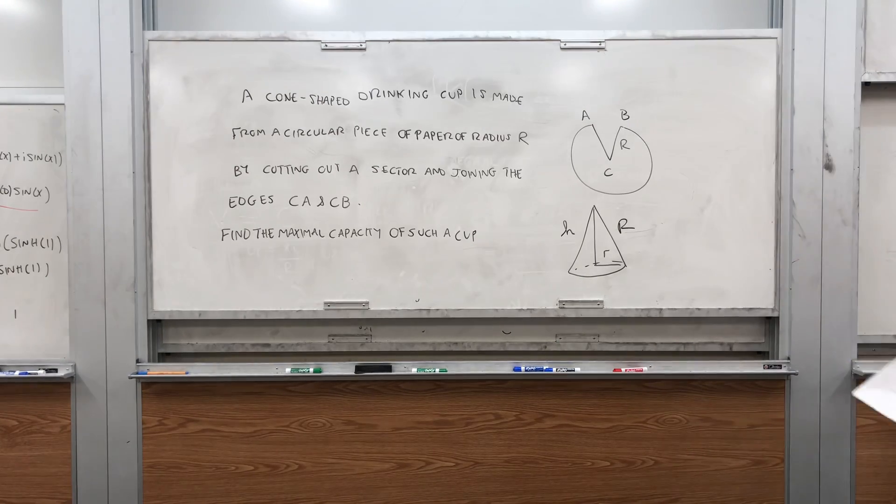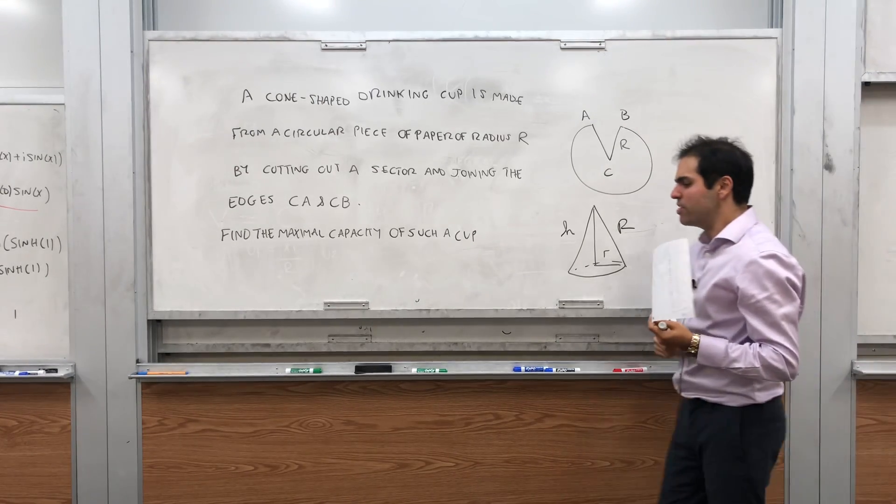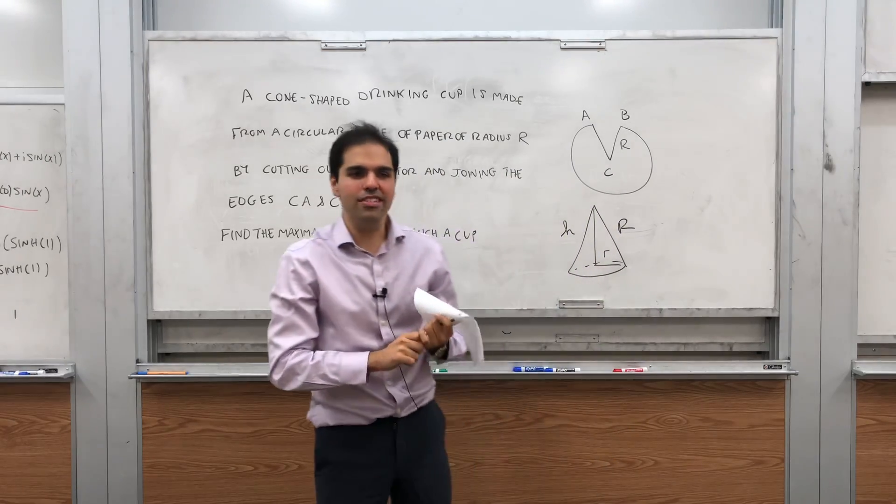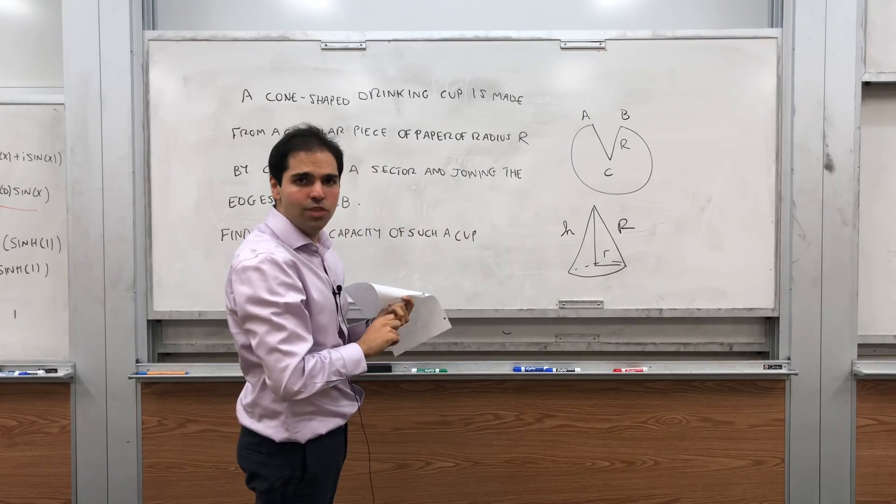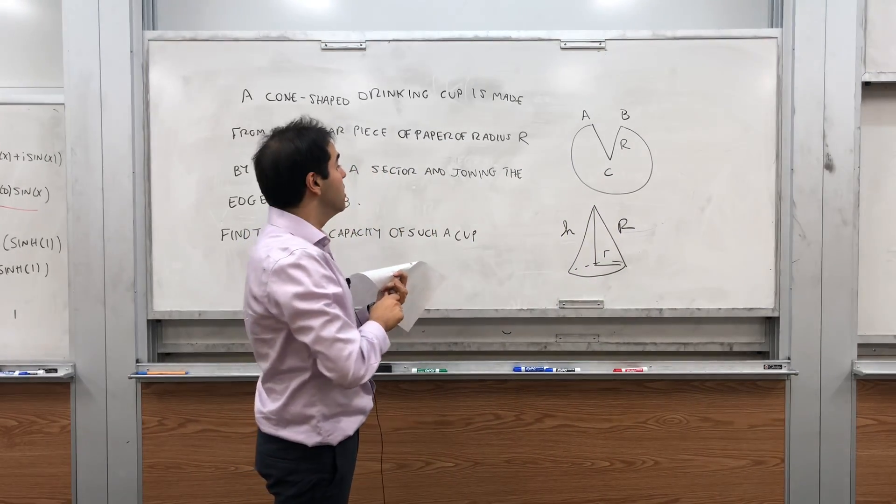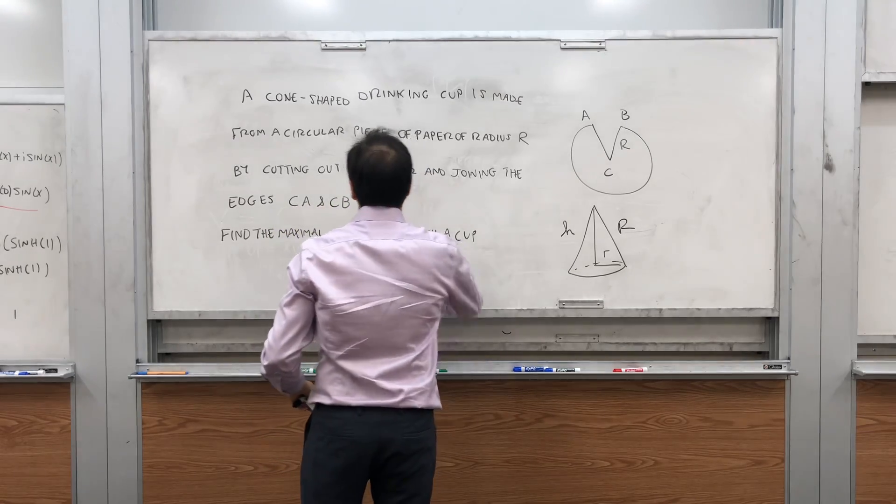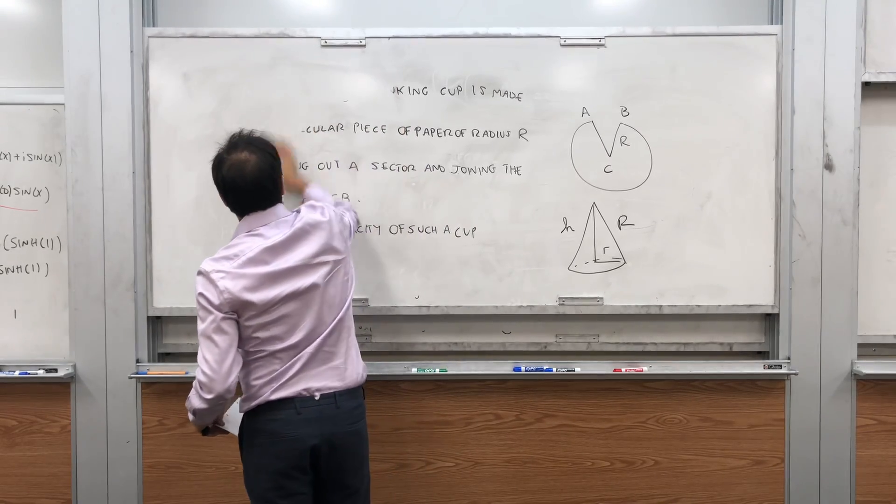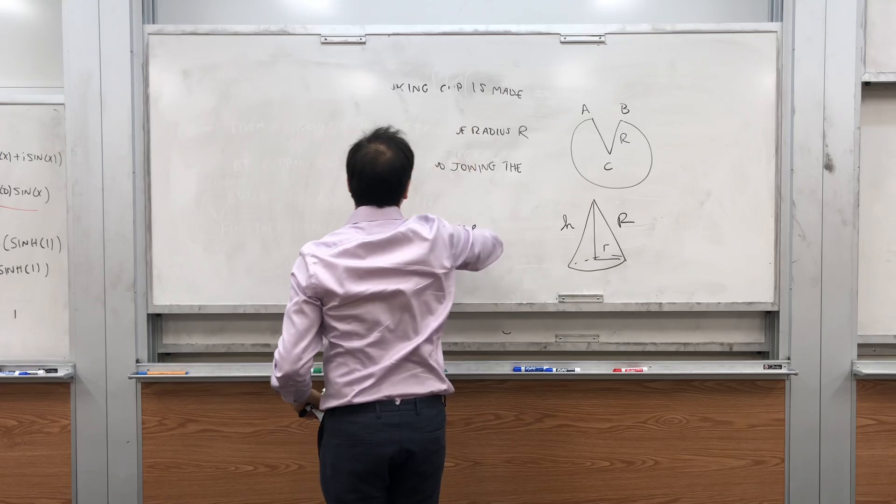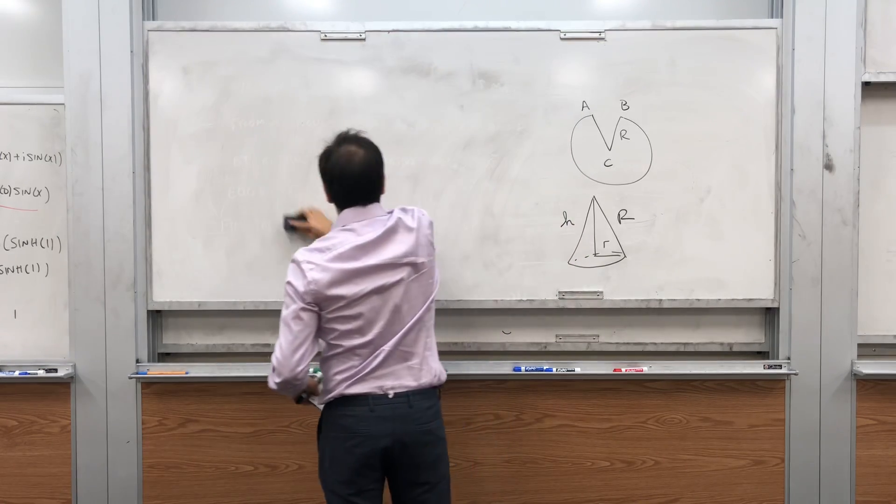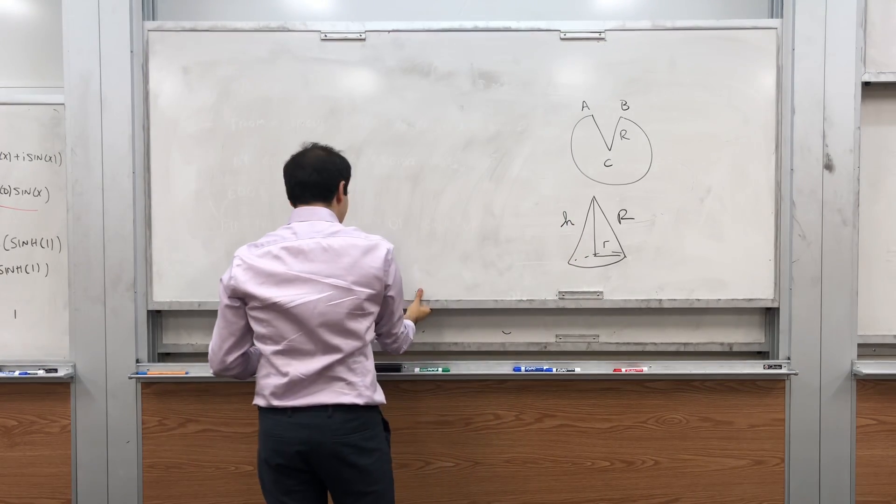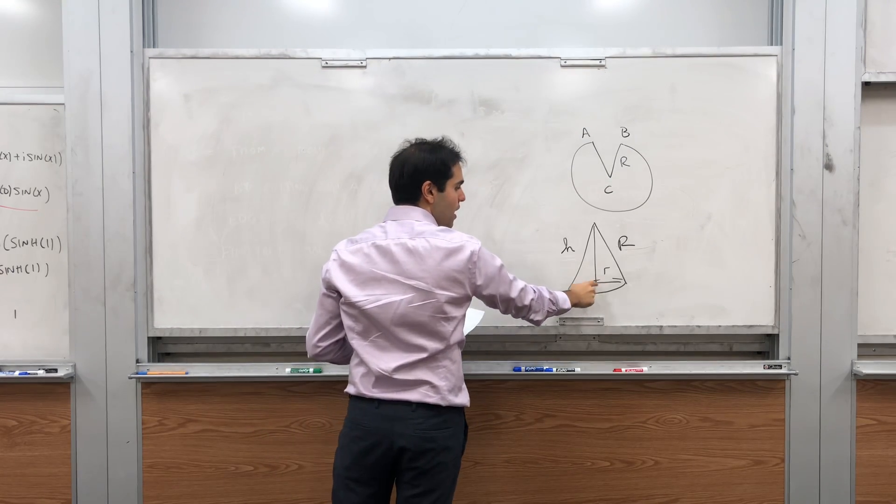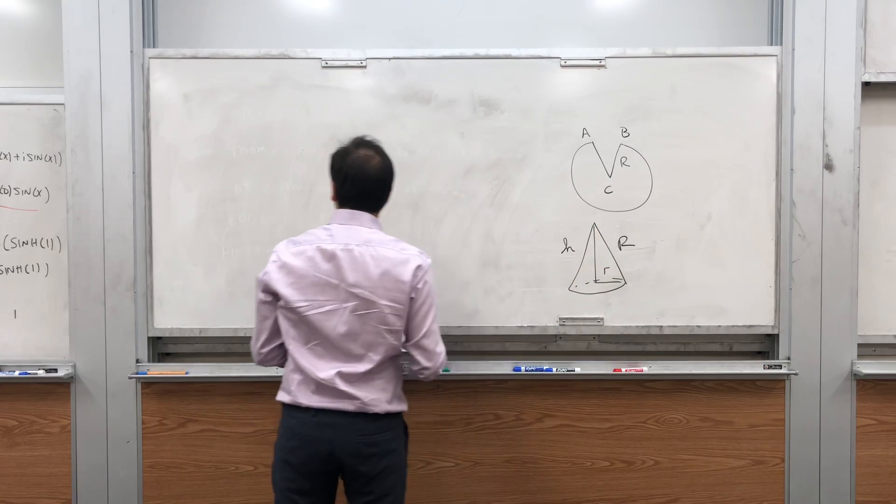We'll use this in a second, but remember for optimization problems it's always the same thing. Draw a nice picture. Second, find some function to optimize. And what we want to do is find the maximum volume of this. So in particular, let's find the volume of this cone.